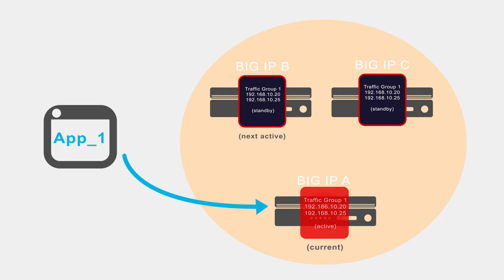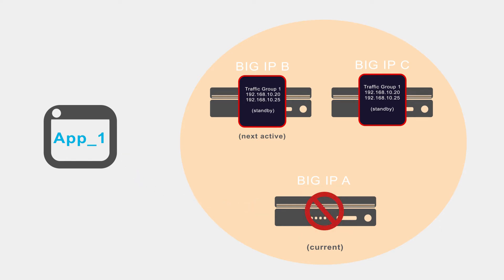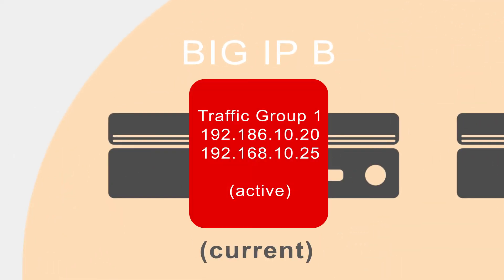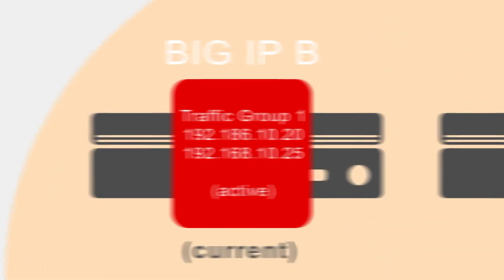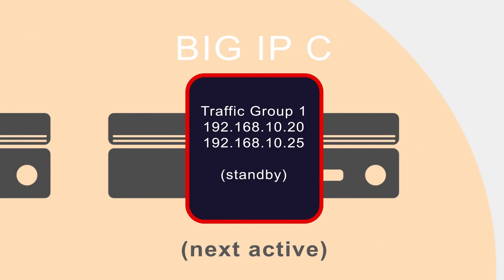If failover occurs, this traffic group will float — or more accurately, go active — on what was the designated next active device for that application flow. In our example, this is BIG-IP-B. After failover, you can see that BIG-IP-B is now the traffic group's current device, and a new device, BIG-IP-C, is designated as next active.